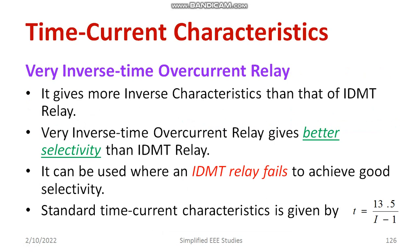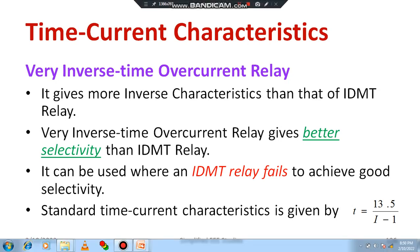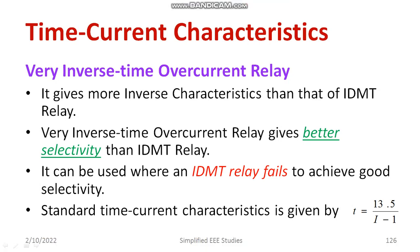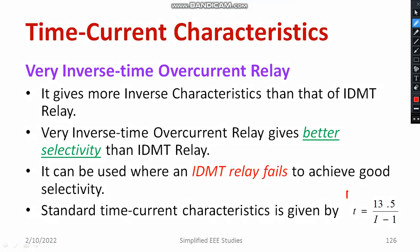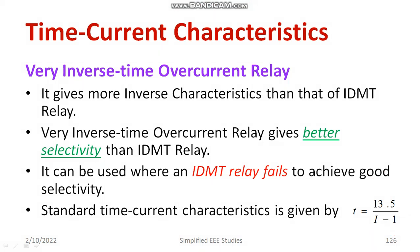If you are looking for more selectivity, then you can use the very inverse time overcurrent relay. It is a modified form of IDMT. Selectivity is very much high. The time-current relationship is given by a specific formula — remember this, especially for competitive examinations. For higher fault current, it will operate very quickly, just like a definite time relay.